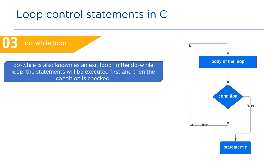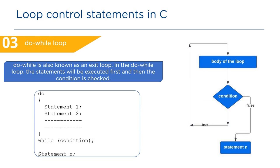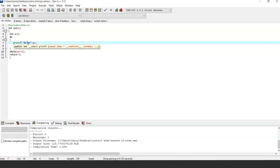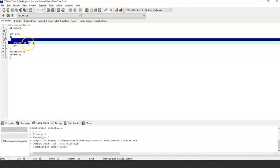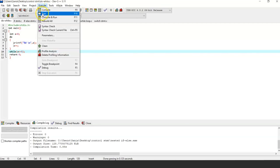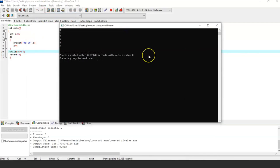Next, the do-while loop, also known as an exit loop, because the statements execute first and then the condition is checked. If the while condition is true, the body executes again and again until the condition is false. Once false, control transfers outside the do-while loop. The syntax is: do { statements } while (condition);. In this example, it prints the statement first and then checks the while condition. The output shows the value of i is printed until the condition is false — values are printed while i is less than or equal to 5.